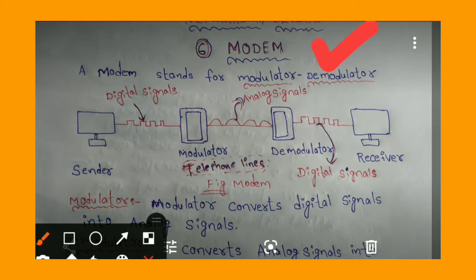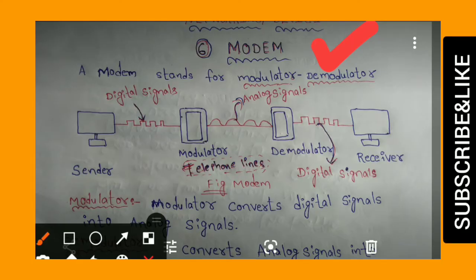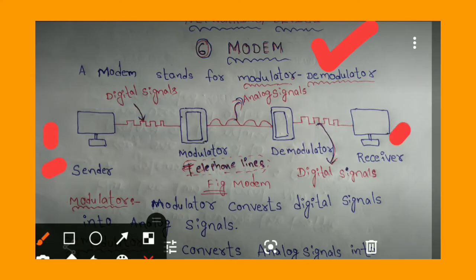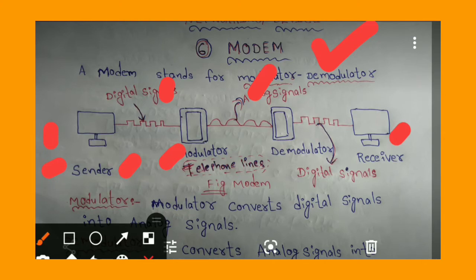Looking at this diagram, we have a sender part and a receiver part. The sender side uses the Modulator, which converts digital signals into analog signals.